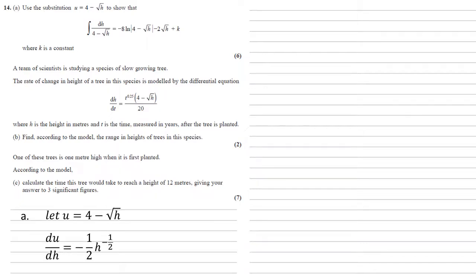If we differentiate this with respect to h, we get du by dh. The 4 will disappear. Root h, remember that's h to the power of 1 half, so we bring that half down, we knock 1 off the power, and remembering there's a negative in there, so it's minus 1 half times h to the power of negative 1 half.